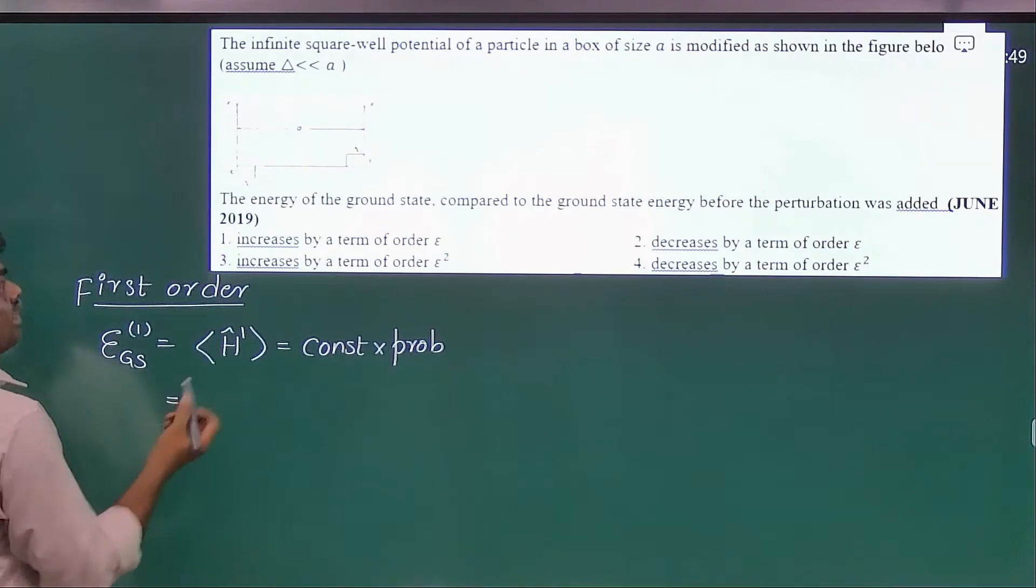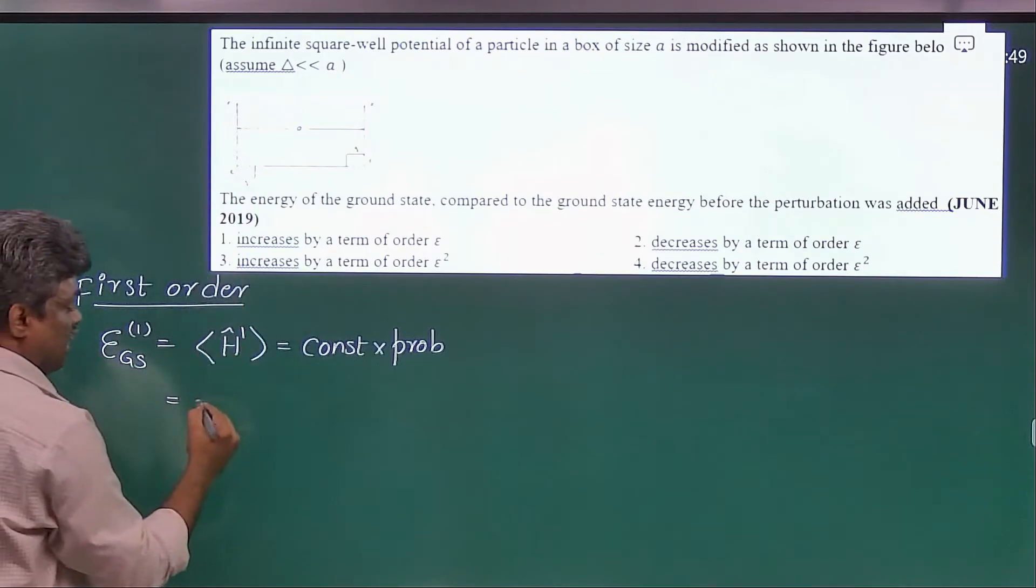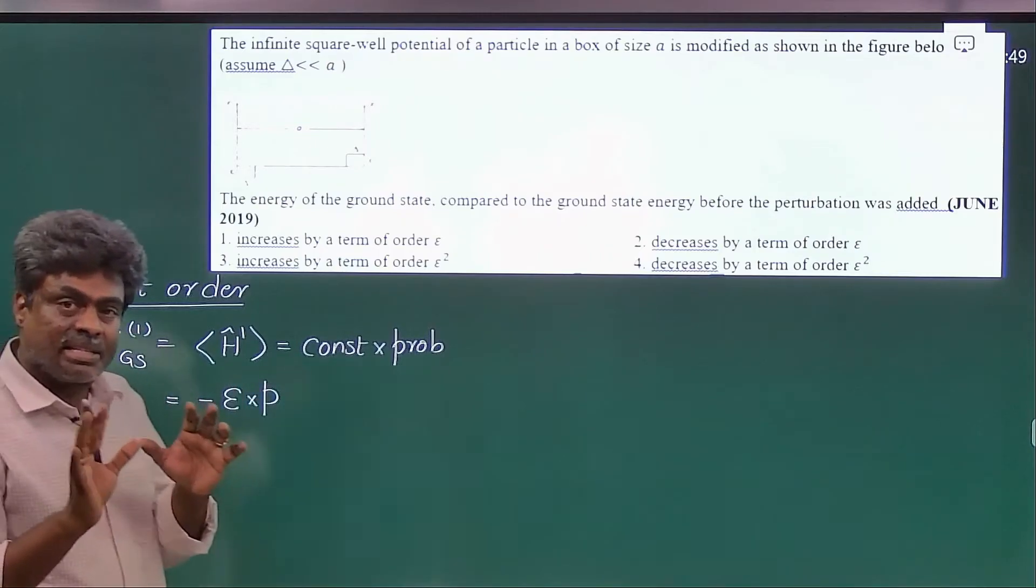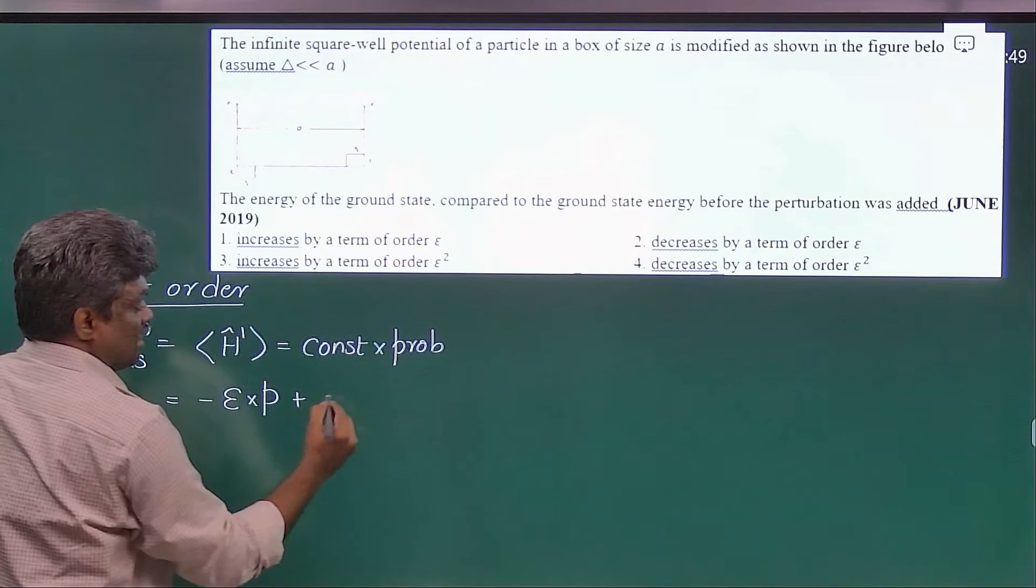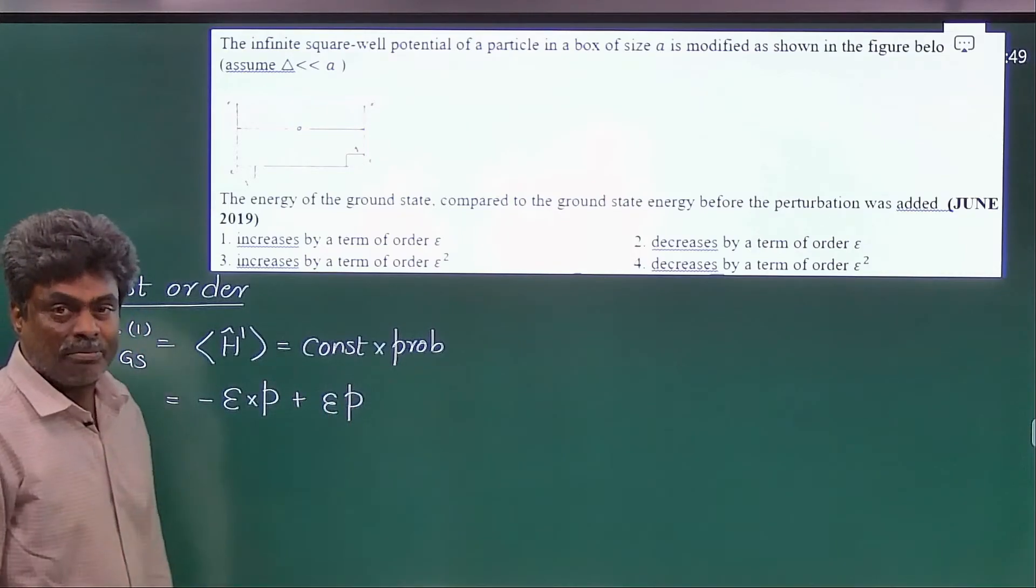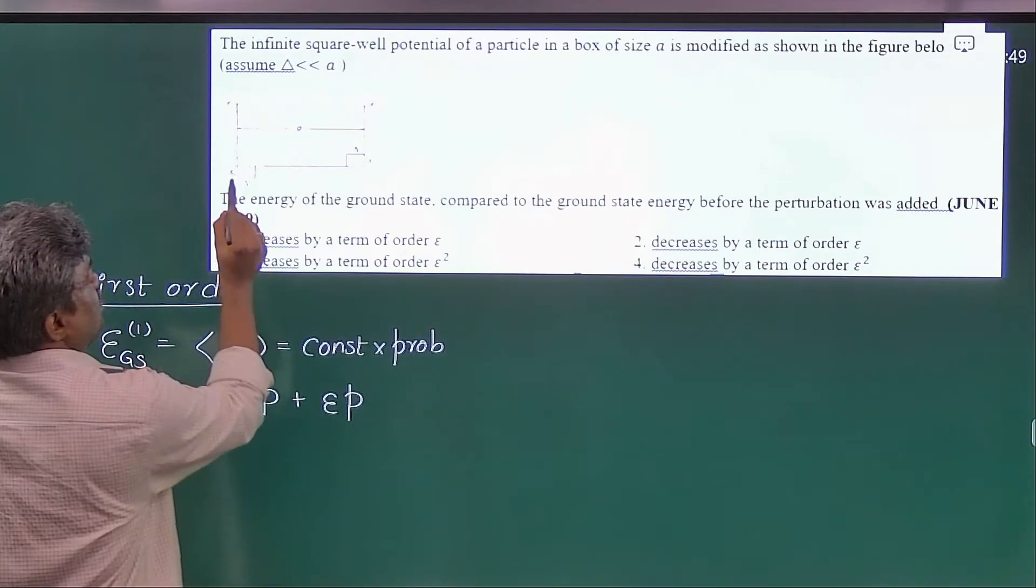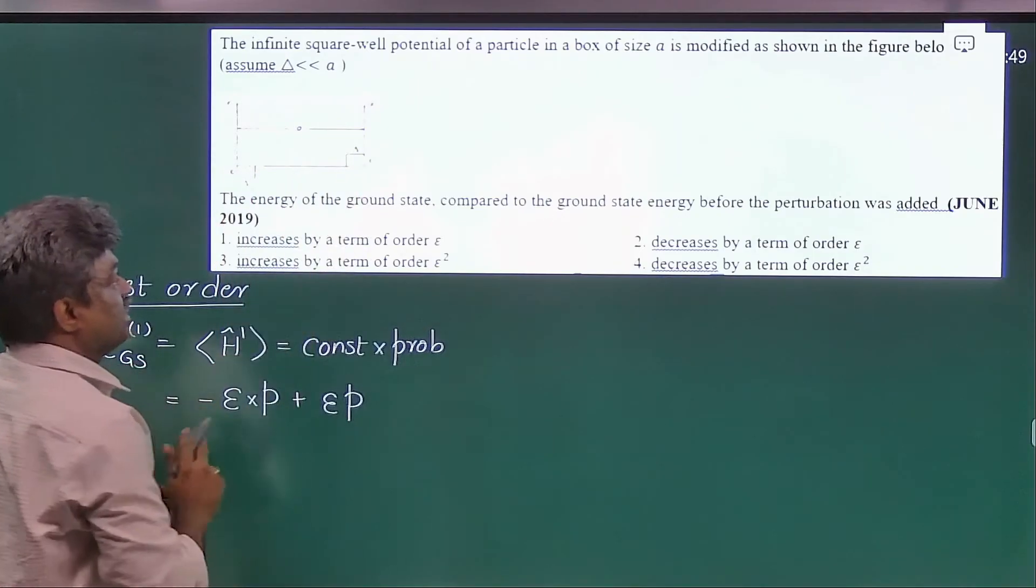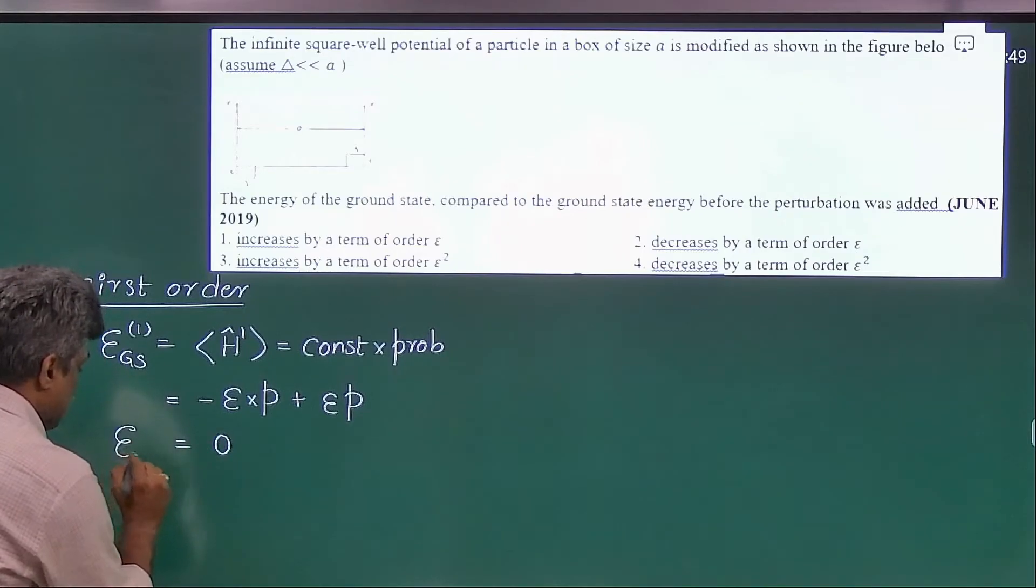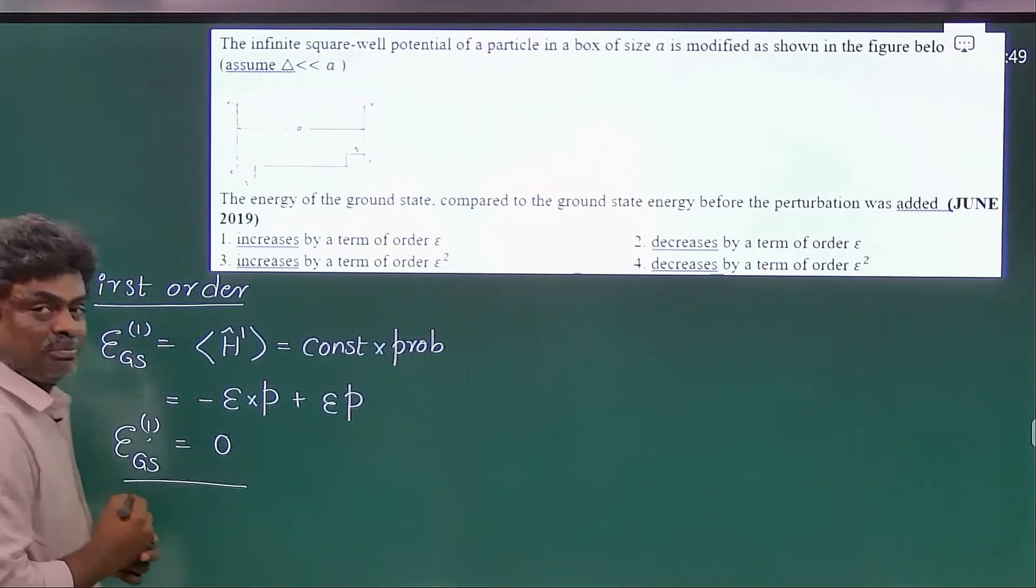So here in the first region we have minus E and you will get some probability in that region, let's say P. And the next constant is plus E and here also you will get the same probability P, because this region of length and this region of length are both the same. So here you will get zero. That's why the ground state first order correction is zero. Then we have to go for second order.